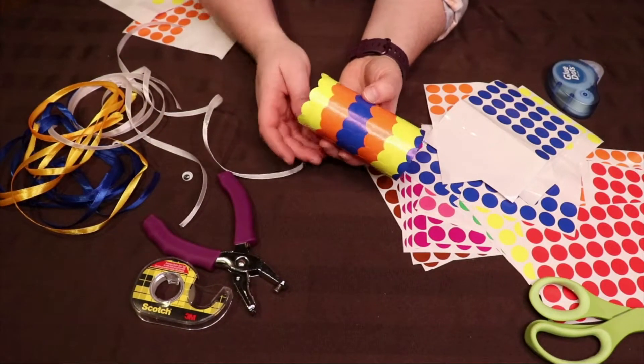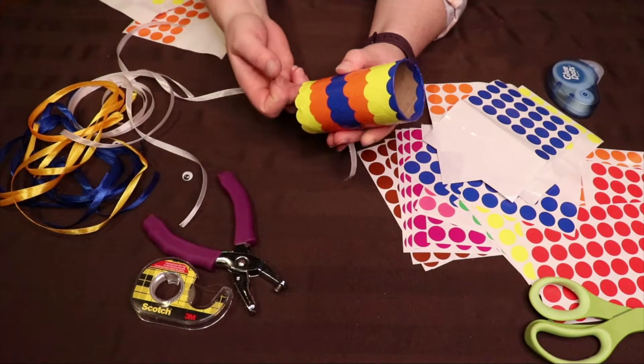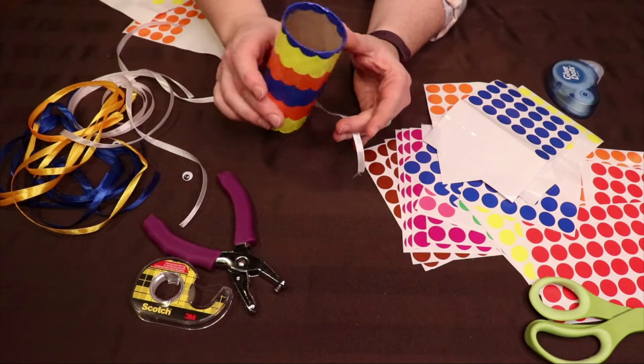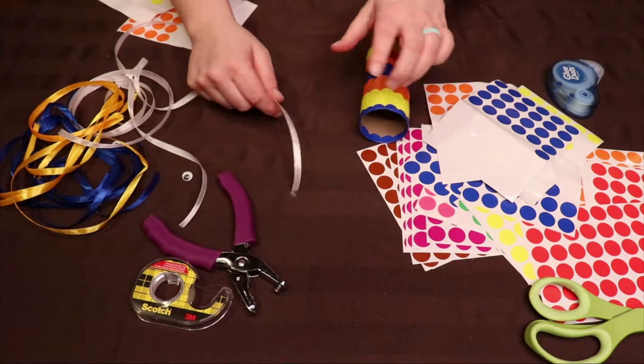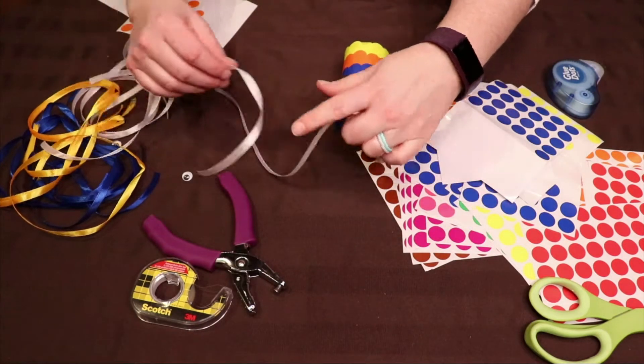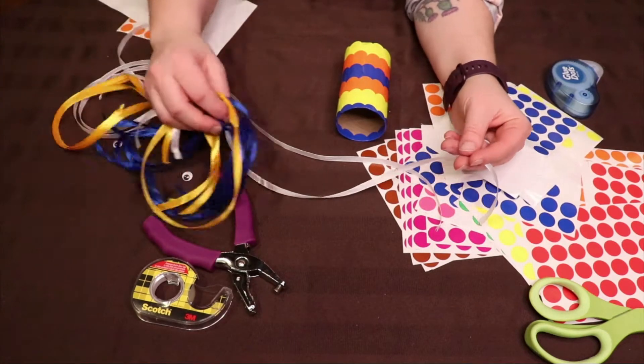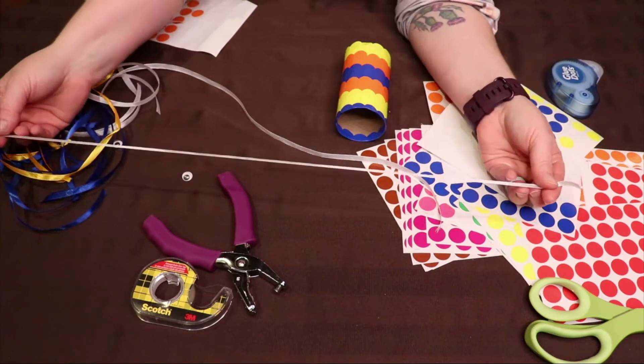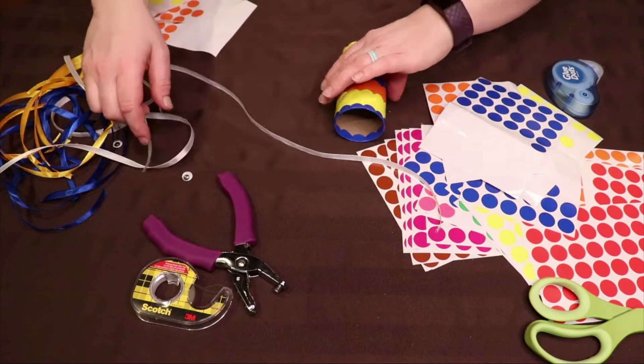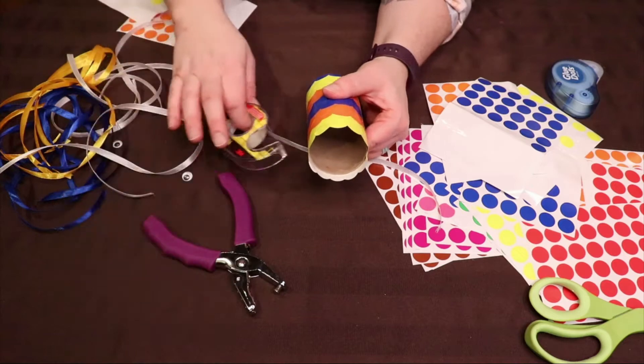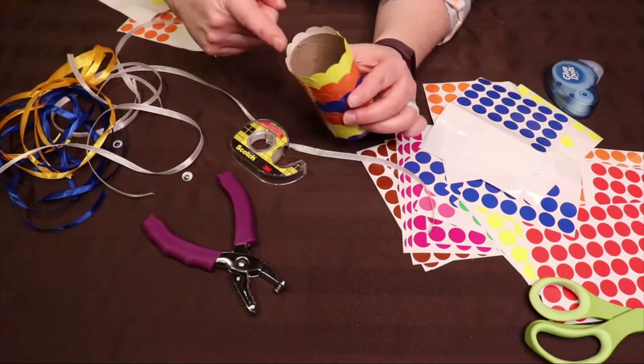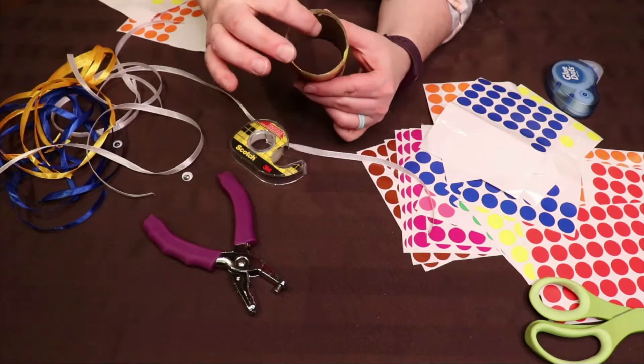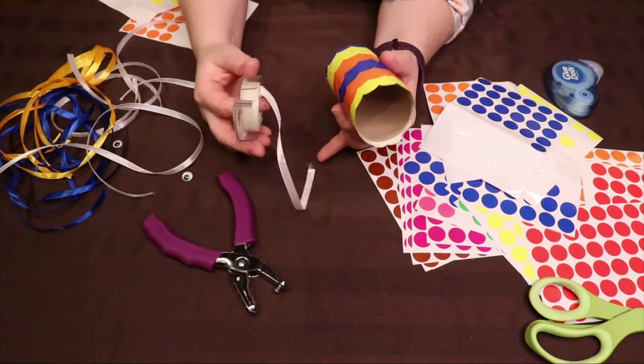The next thing I will do is add the ribbon to the bottom of the fish windsock. I've gone ahead and cut 12 pieces of ribbon, three different colors here, approximately 30 to 40 centimeters in length. And I'm going to attach them on the bottom here right inside the paper towel roll or the toilet paper roll with double-sided tape.